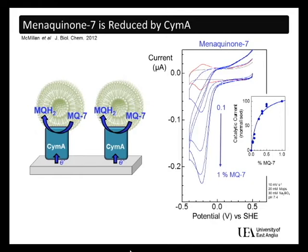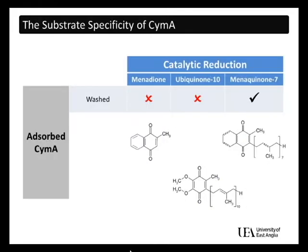Parallel experiments performed with menadione or ubiquinone-10 instead of M7 showed no evidence for the catalytic reduction of these other quinones. We can conclude that SimA selects for naphthoquinone substrates carrying a hydrophobic chain.